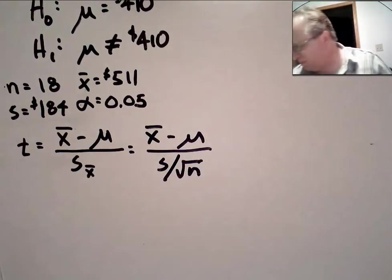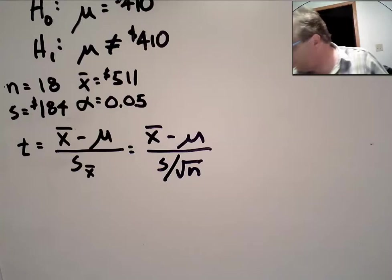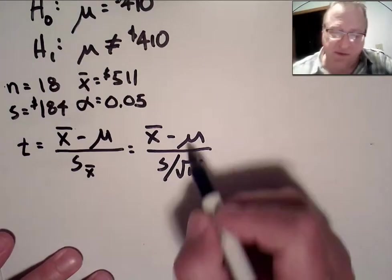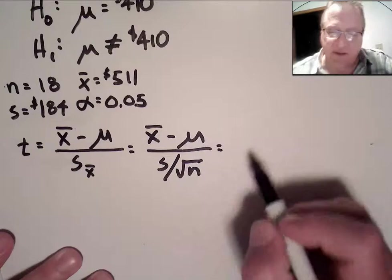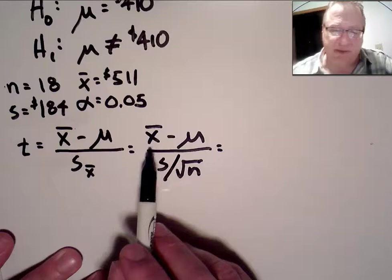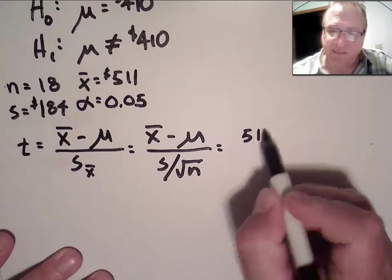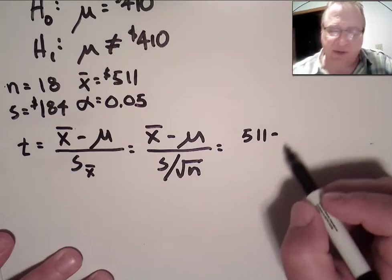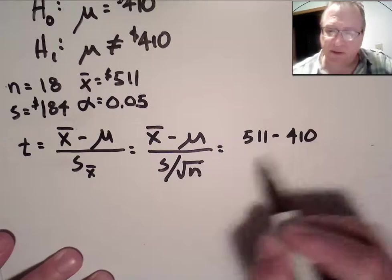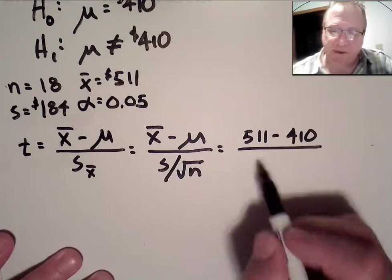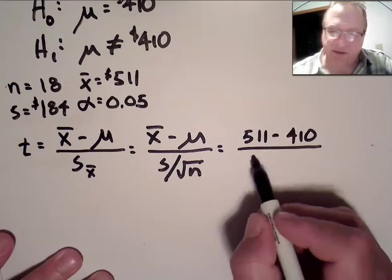Okay, so let's fill in our values and see what we get for our t-statistic. Let's see. X-bar. Our sample mean is 511 minus the proposed population mean $410 divided by s, the sample standard deviation $184,